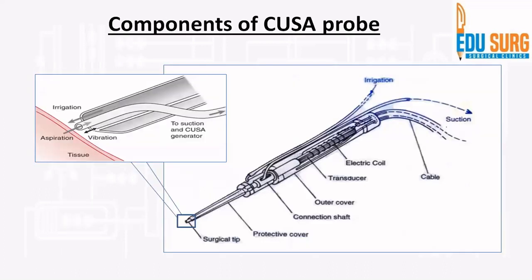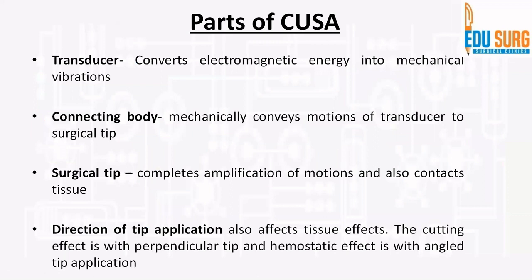I hope you have understood the concepts. There is an irrigation channel which continuously irrigates the probe so that the tissue is cleared and you get a clean operative field. There is an aspiration channel connected to suction that helps in aspirating the emulsion created by irrigation, fragmentation, and cavitation. The surgical tip keeps oscillating at high frequencies, which creates the low pressure zone and the cavitation effect. These are basically the components of the CUSA probe. Your OT staff needs to be trained to handle this machine so that it is used properly.